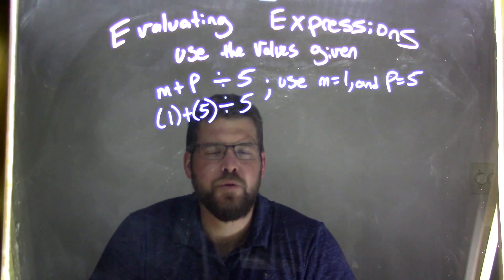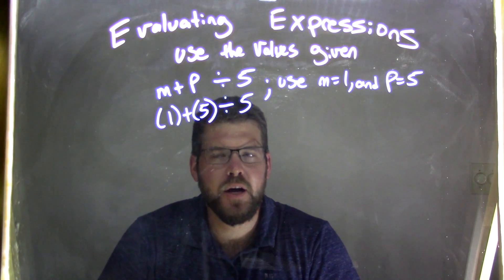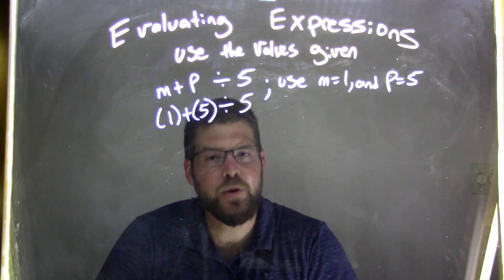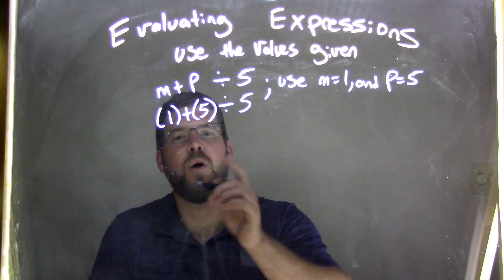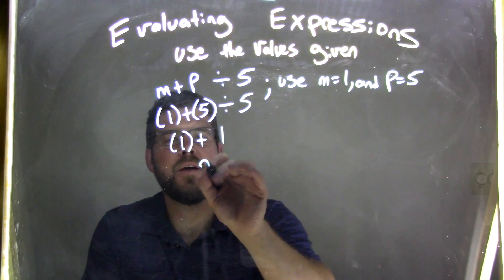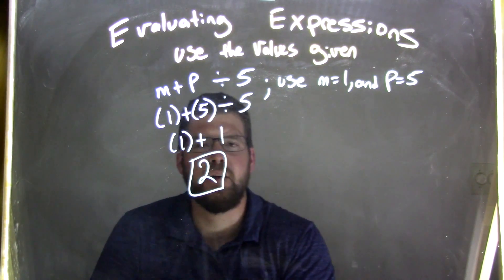Now we need to use our order of operations. Division comes before addition, so division first: 5 divided by 5, just like any number divided by itself, is 1. So we bring down the 1 plus 1 here, and 1 plus 1 is 2, and that is our final answer.